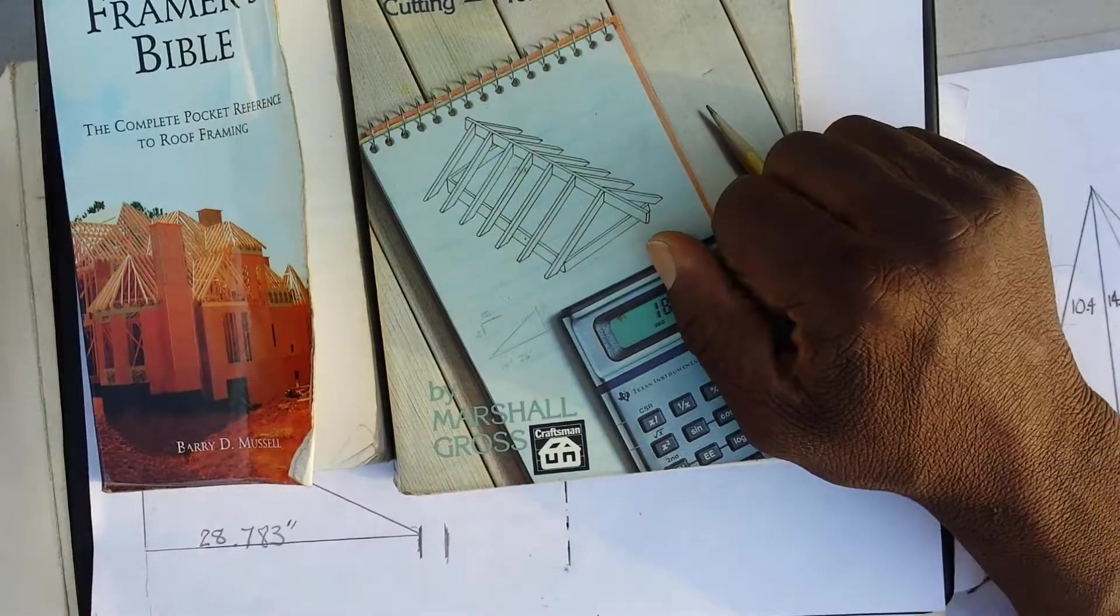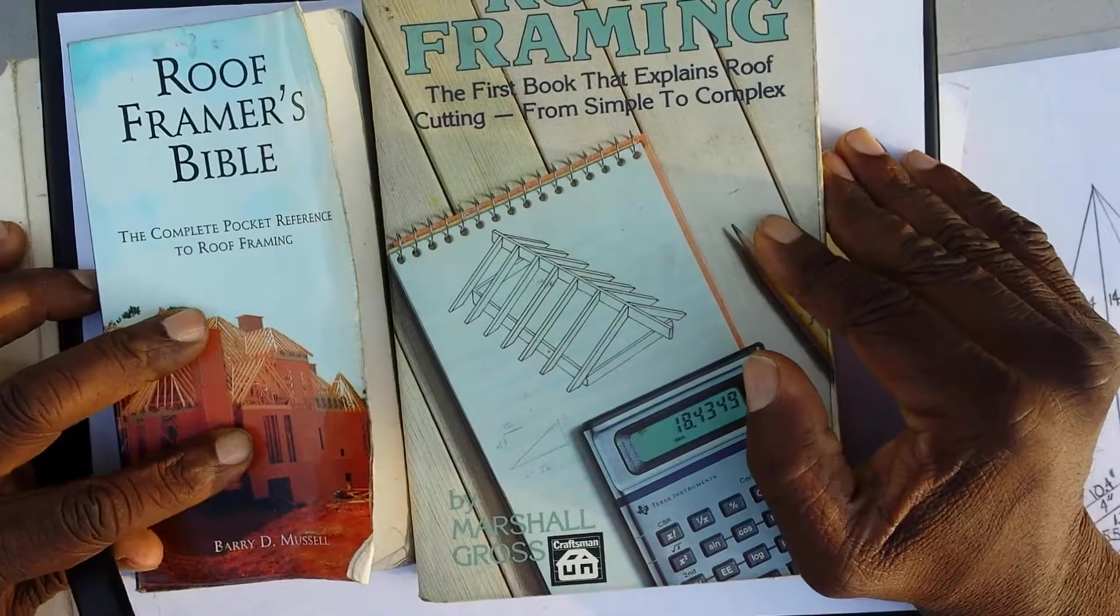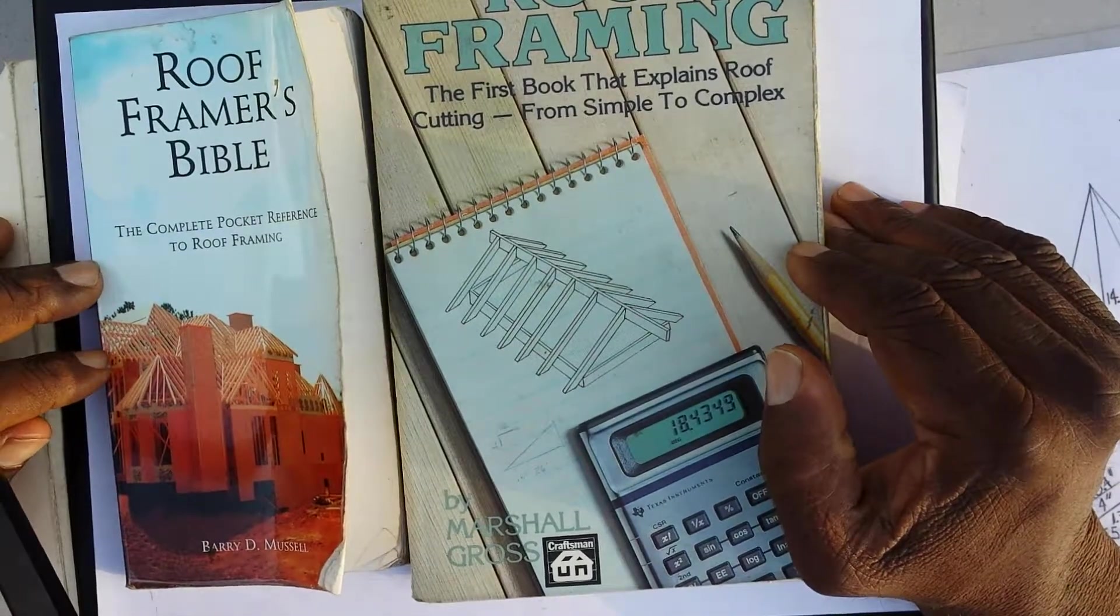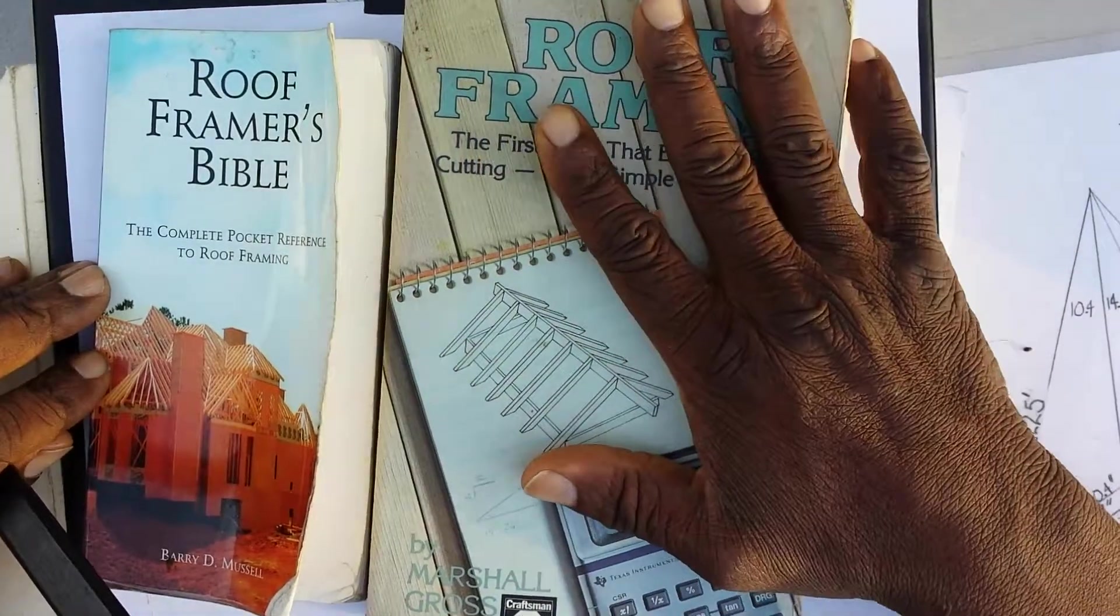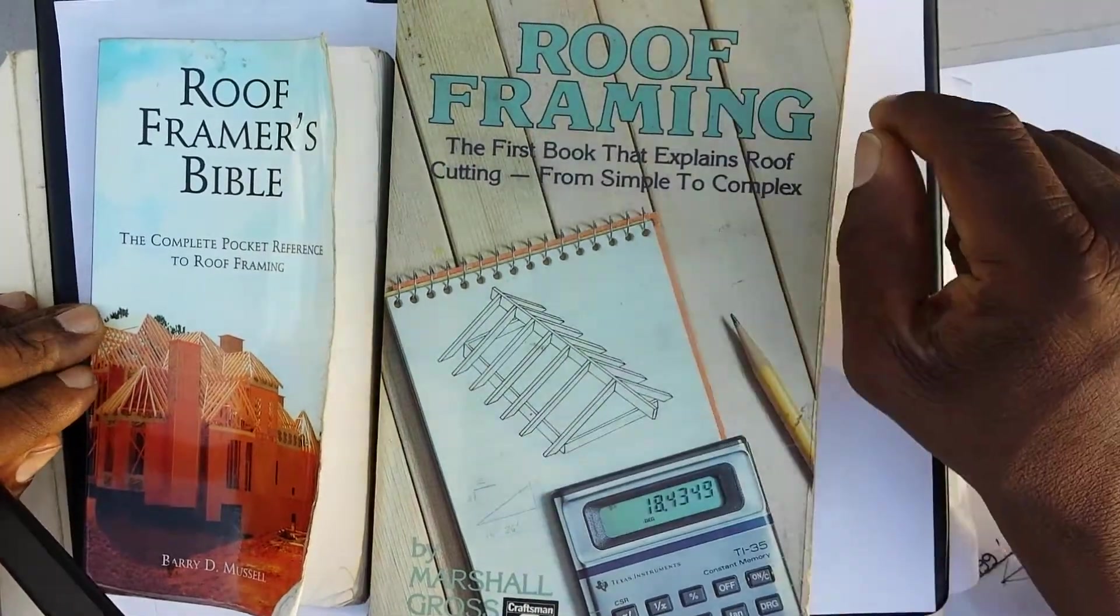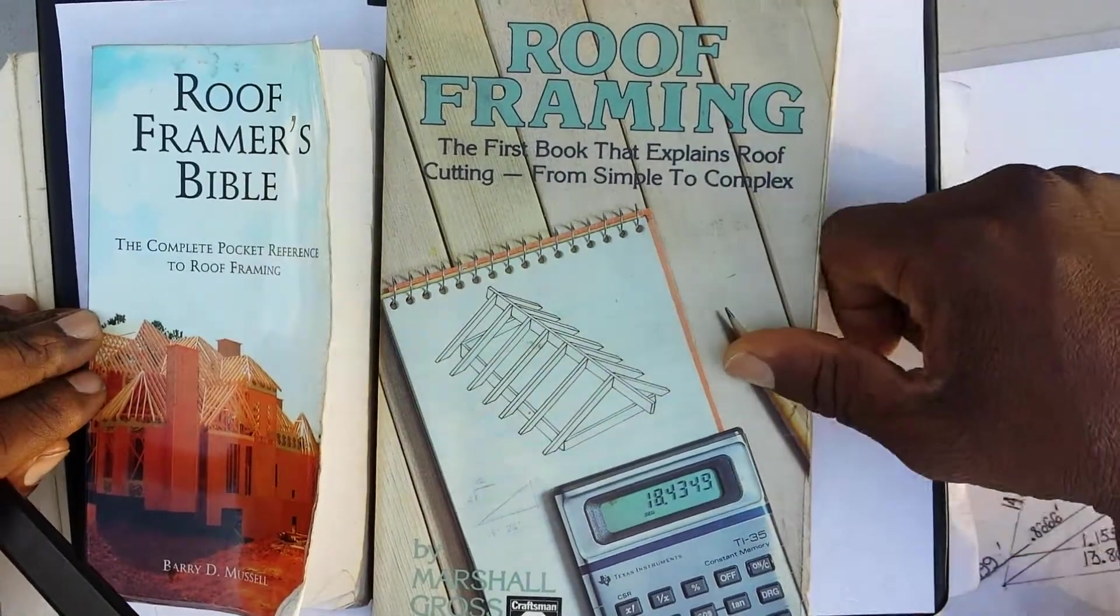Some of my two main books that I like are The Roof Framer's Secret, Roof Framer's Bible, and this book. I think this is the king of all books, I really do. And it's The Roof Framing by Marshall Gross.